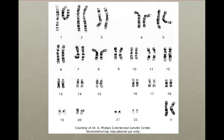When the Human Genome Project began, the order, number, and banding patterns of chromosomes had been determined, including the location of some genes.